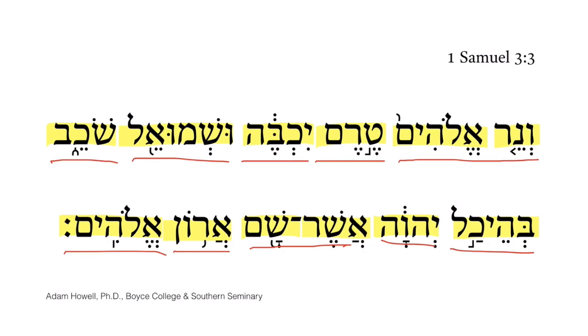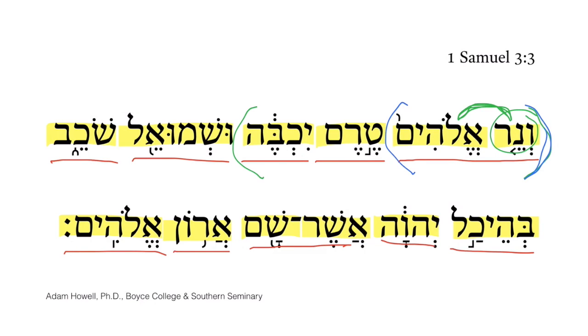The verse opens with a nominal clause, meaning a noun — nair, or 'the lamp.' Nair here is in construct with Elohim, and so the subject of the nominal clause is 'the lamp of God.'